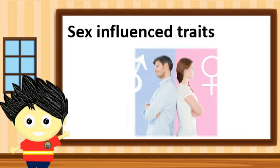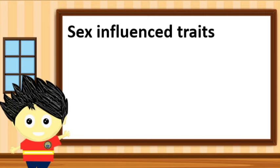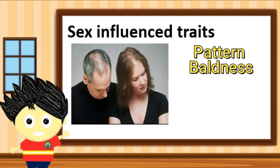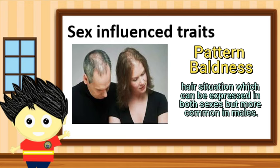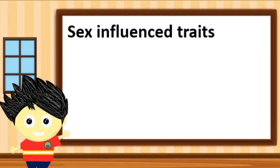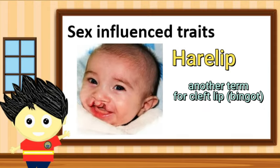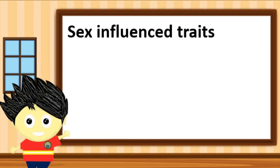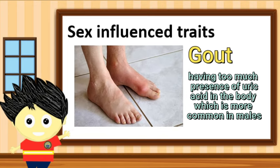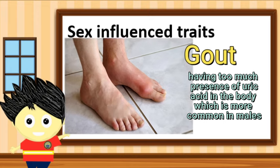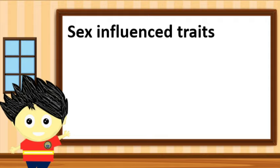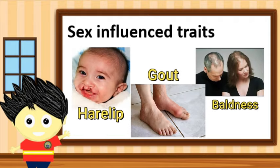An example of a trait under sex-influenced traits is what we call pattern baldness. This may be expressed in both sexes — in both females and males — but it is more frequently observed in males. Besides pattern baldness, other traits considered under sex-influenced traits include hair lip (a split in the upper lip) and gout, which occurs due to the accumulation of uric acid in the tissues. These are just some examples of traits that may be observed in both sexes but more frequently seen in one sex.